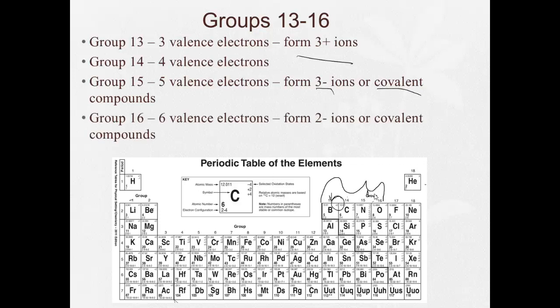Group 16, and I don't know if you see a trend here, will form 2- ions or covalent compounds because these are two away from having a stable electron configuration, so they only need 2. Don't forget, when plus ion means lose electrons, a negative ion means gain electrons.